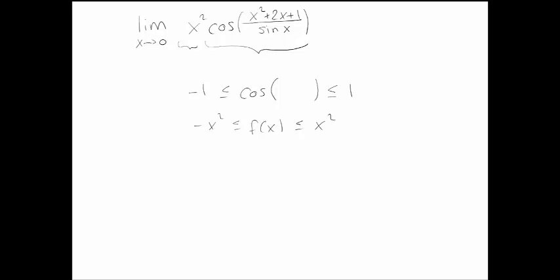Now, as x goes to 0, both of these things also go to 0. So because my function is between two things that squeeze down to the same point by the squeeze theorem, the limit of my function is also 0.